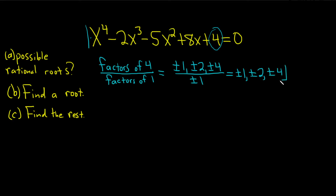It's really important to have the plus or minus — don't forget the plus or minus. That's part A. For part B, we have to find a root. We just have to pick one of these numbers and use synthetic division, and keep doing that until we get a remainder of 0. If we pick a number and we get a remainder of 0, then we know that that is a root.